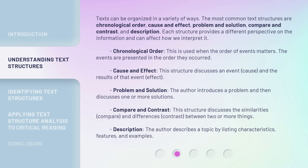Texts can be organized in a variety of ways. The most common text structures are chronological order, cause and effect, problem and solution, compare and contrast, and description. Each structure provides a different perspective on the information and can affect how we interpret it.